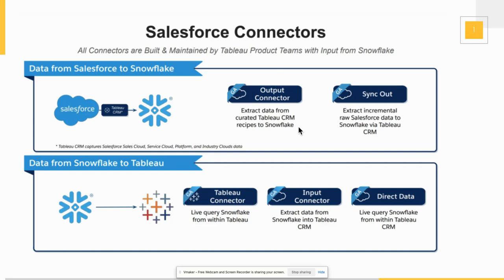To summarize: there is the output connector, based on recipes you've built in Tableau CRM — you write the output of those results directly into Snowflake. The second path is the sync-out connector: if you don't have recipes built, and you just want base objects and records available in Snowflake, you use the sync-out connector. I'm going to demo how you can set up both and see them in action.